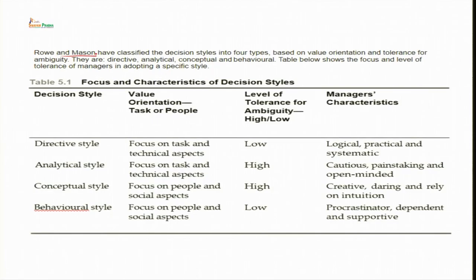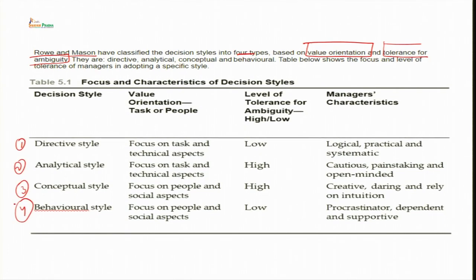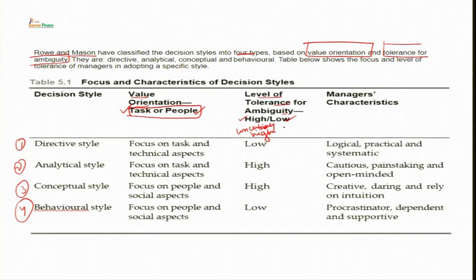Rowe and Massen classified decision styles into four types based on two orientations: value orientation and tolerance for ambiguity. The four styles are directive, analytical, conceptual and behavioral. Value orientation relates to whether focus is on task or people. Tolerance for ambiguity — high means high uncertainty, low means high certainty. Under directive style, the focus is on task and technical aspects, with low tolerance for ambiguity, relying on logical, practical and systematic decision making.